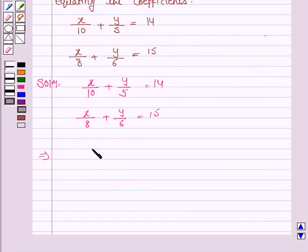Taking LCM for the first equation, the LCM would be 10. So the first equation becomes x plus 2y upon 10 is equal to 14. And the second equation becomes 3x plus 4y upon 24.